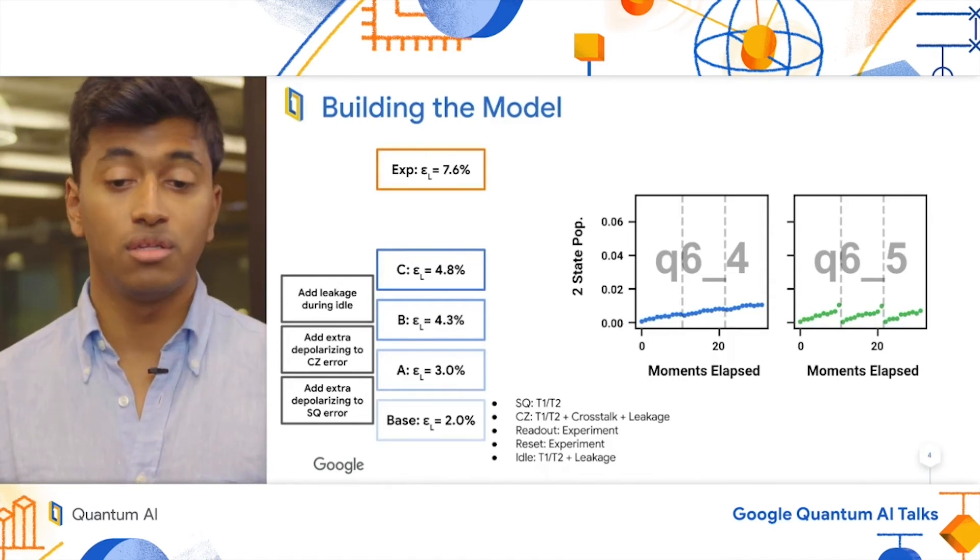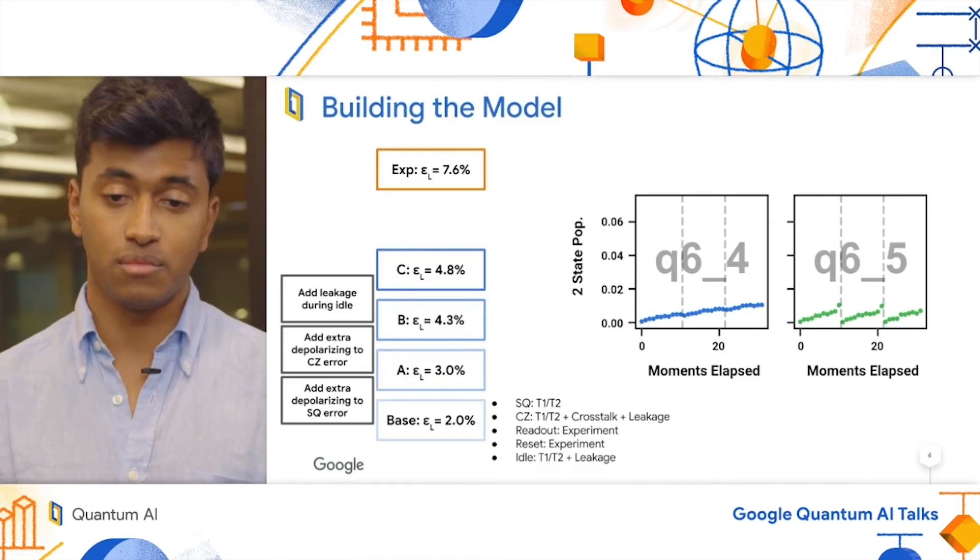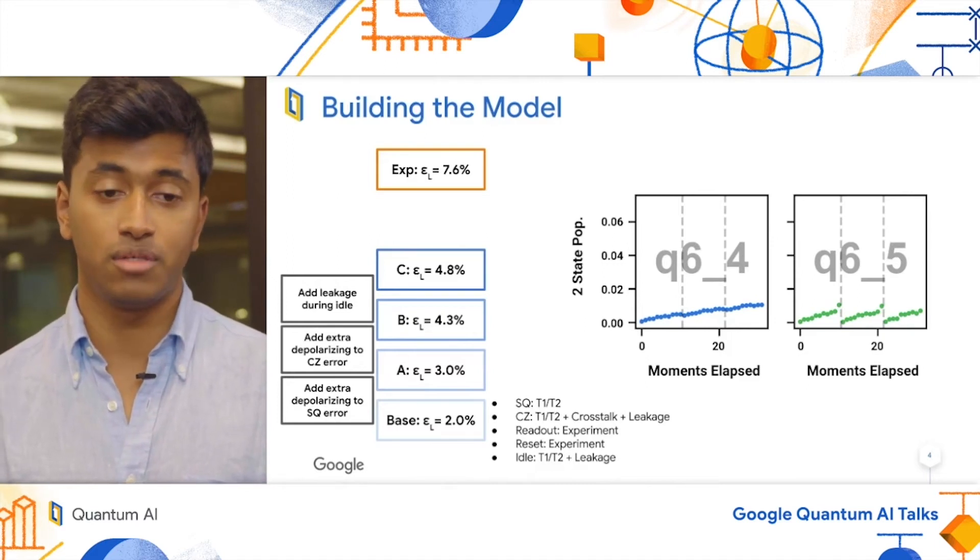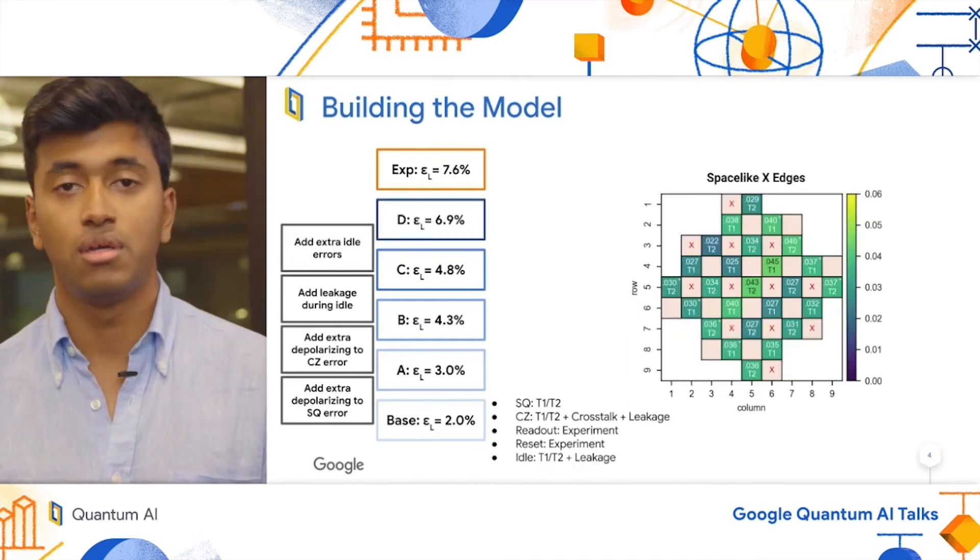On the right plot, we have a measured qubit showing green. You can see that here, the leakages reset at the end of every round when the qubit undergoes reset. From these two plots, we can extract effective heating rates and update the leakage rates used in our experiment. This brings our logical error rate to 4.8%.